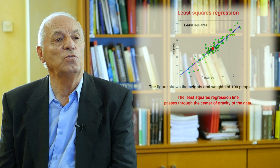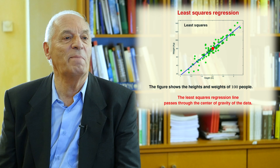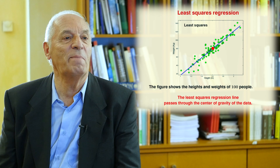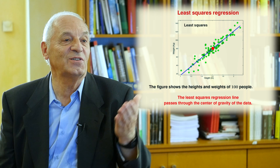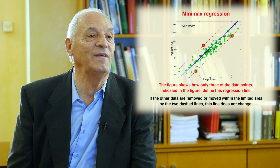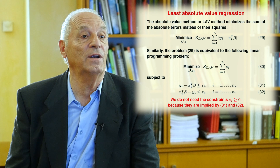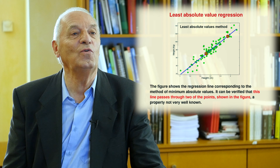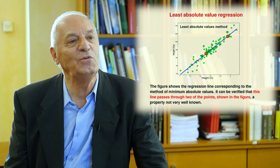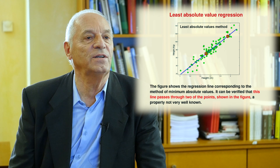Finally, we deal with regression models. In the case of least squares regression, the solution passes through the center of gravity — many users don't know this, and examples where this is not satisfied indicate the problem is wrong. In the case of minimax regression, only three data points define the solution, and we can even solve it graphically. In the case of least absolute value regression, the solution should pass through two of the data points — another result unknown to many people that helps you understand regression.